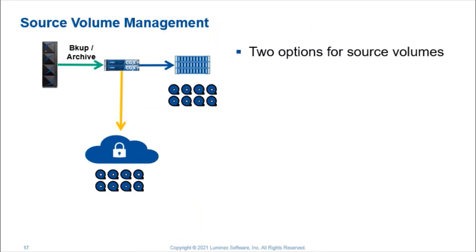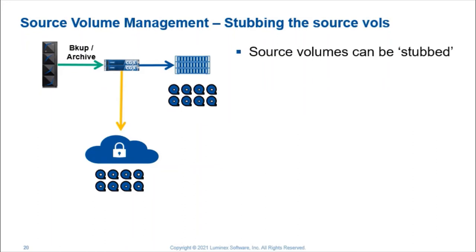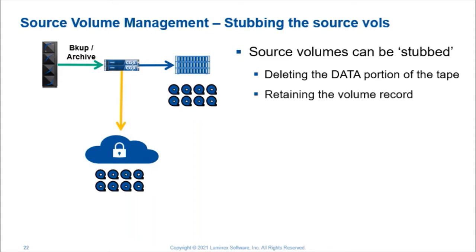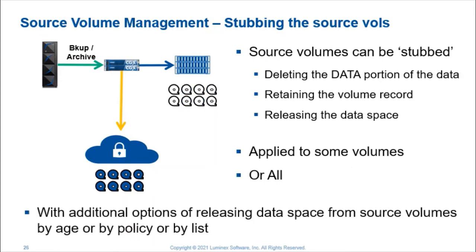Once the protected data store is populated, there are also options for further management of the source volumes. By default, leave the source tape images exactly as they are. Alternatively, the storage space they hold on local storage can be released — we refer to this as stubbing. When a source volume is stubbed, the data portion of the tape image is deleted, retaining just the volume record on on-site storage, releasing the storage space held by that volume or volume groups. It can be selectively applied to an individual volume, group of volumes, or all, with additional options of releasing the data space by age, by policy, or from customized lists.